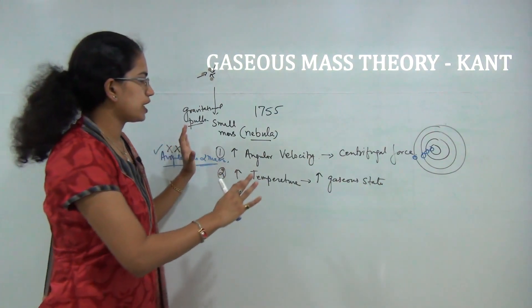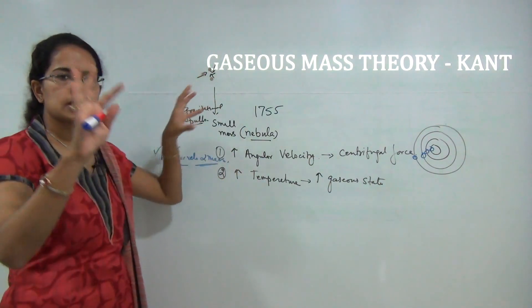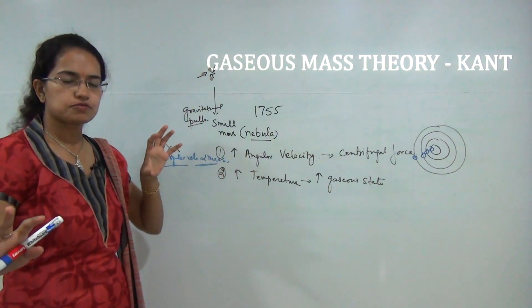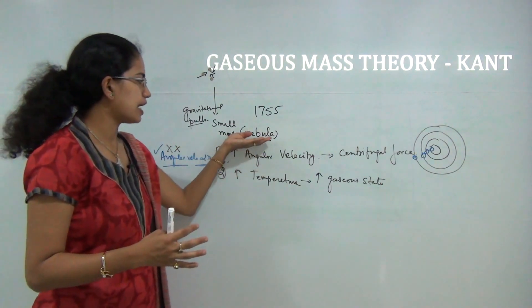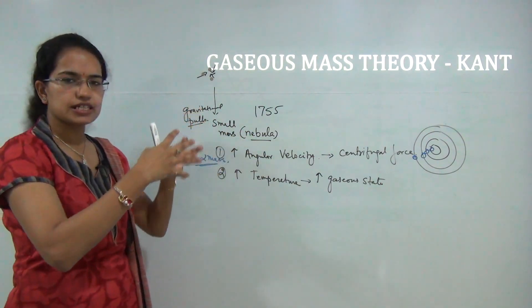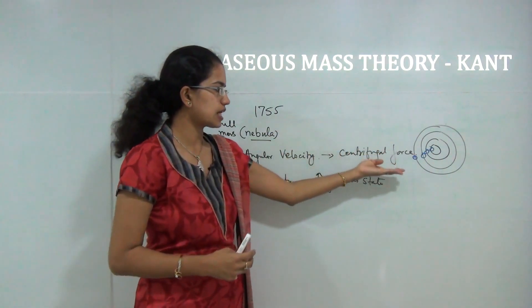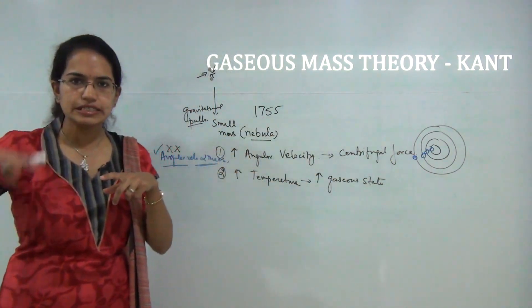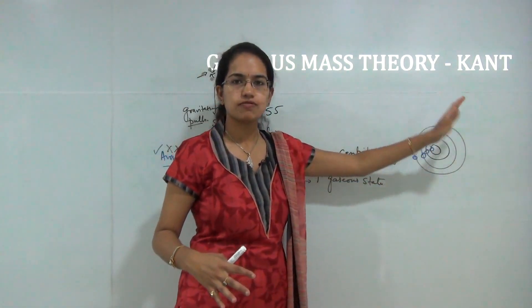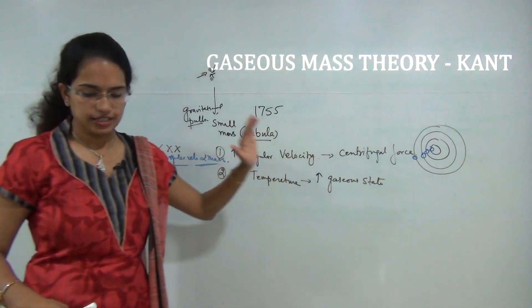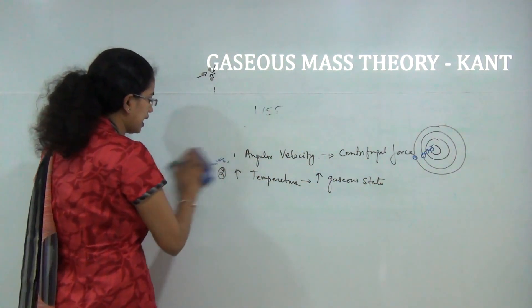In summary, Kant's theory explained that there are solid cold masses in the outer world known as nebulae. Due to gravitational pull they come together, which leads to an increase in angular velocity that gradually produces centrifugal force, which generates concentric rings that form the planets. This process similarly accounts for sub-planets or satellites. That was the basic idea propounded by Kant.